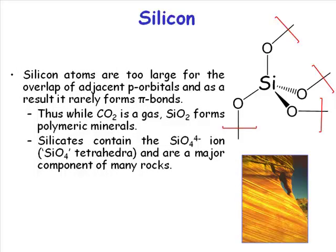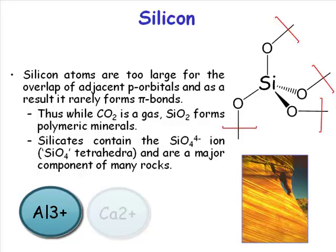If we take one of these species in isolation, that is formally an SiO4 4- ion. And that SiO4 4- ion doesn't necessarily have to share its oxygens with other silicon centers. It can share its oxygen atoms with other ions, like aluminium or calcium.